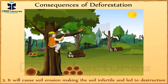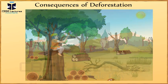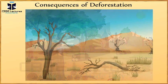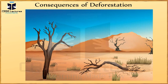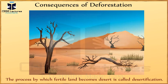Deforestation will cause soil erosion, making the soil infertile and leading to destruction. The roots of trees bind the particles of topsoil together, preventing them from being carried away by wind and water. When trees are cut, there are no roots to bind the soil, causing erosion of the top layer. The lower layer has less humus, so plants do not grow well. The process by which fertile land becomes desert is called desertification.